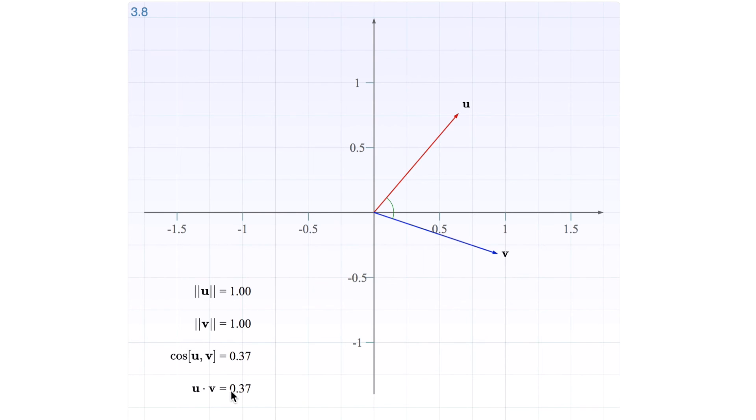Then we can see that the dot product is just the cosine of the smallest angle.